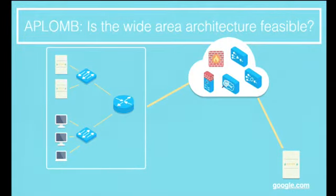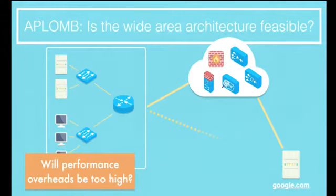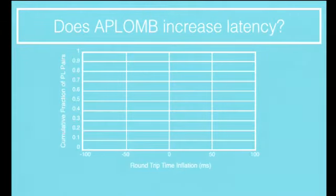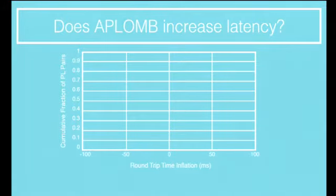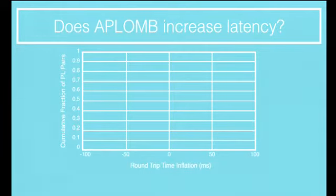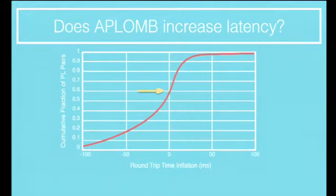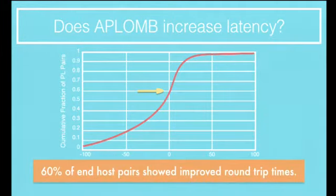Now we return to the first question APLOM addresses: will the performance overheads be too high? We first asked whether latency would increase. From 100 US universities, we had each university measure the latency to communicate between a pair, and then the latency to redirect through an EC2 data center instead. We subtracted one from the other to get an inflation delta. Looking at a CDF of all those delta values, surprisingly, for 60% of those pairs the inflation value was actually negative — it was faster to redirect through APLOM than to take the default internet path.